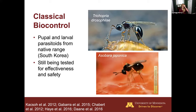First, we have classical biocontrol. When SWD was first found in America, researchers went to its native range in South Korea and looked for biocontrol agents — beneficial insects that help suppress the population of a pest species like SWD. Unfortunately, these are not yet available in Minnesota. Bringing them over requires a lot of testing for effectiveness and safety, but there is potential for biocontrol agents in the future.